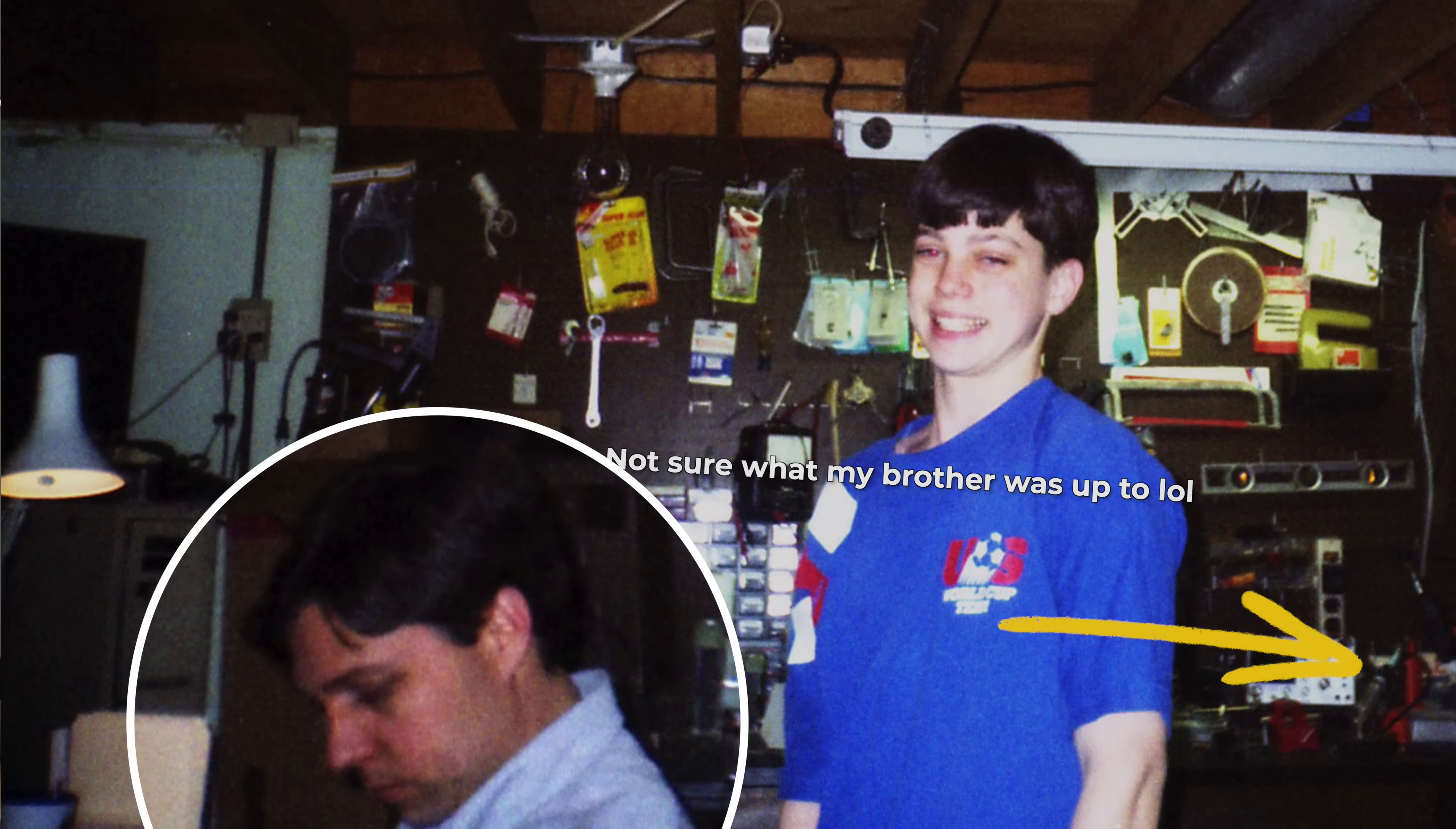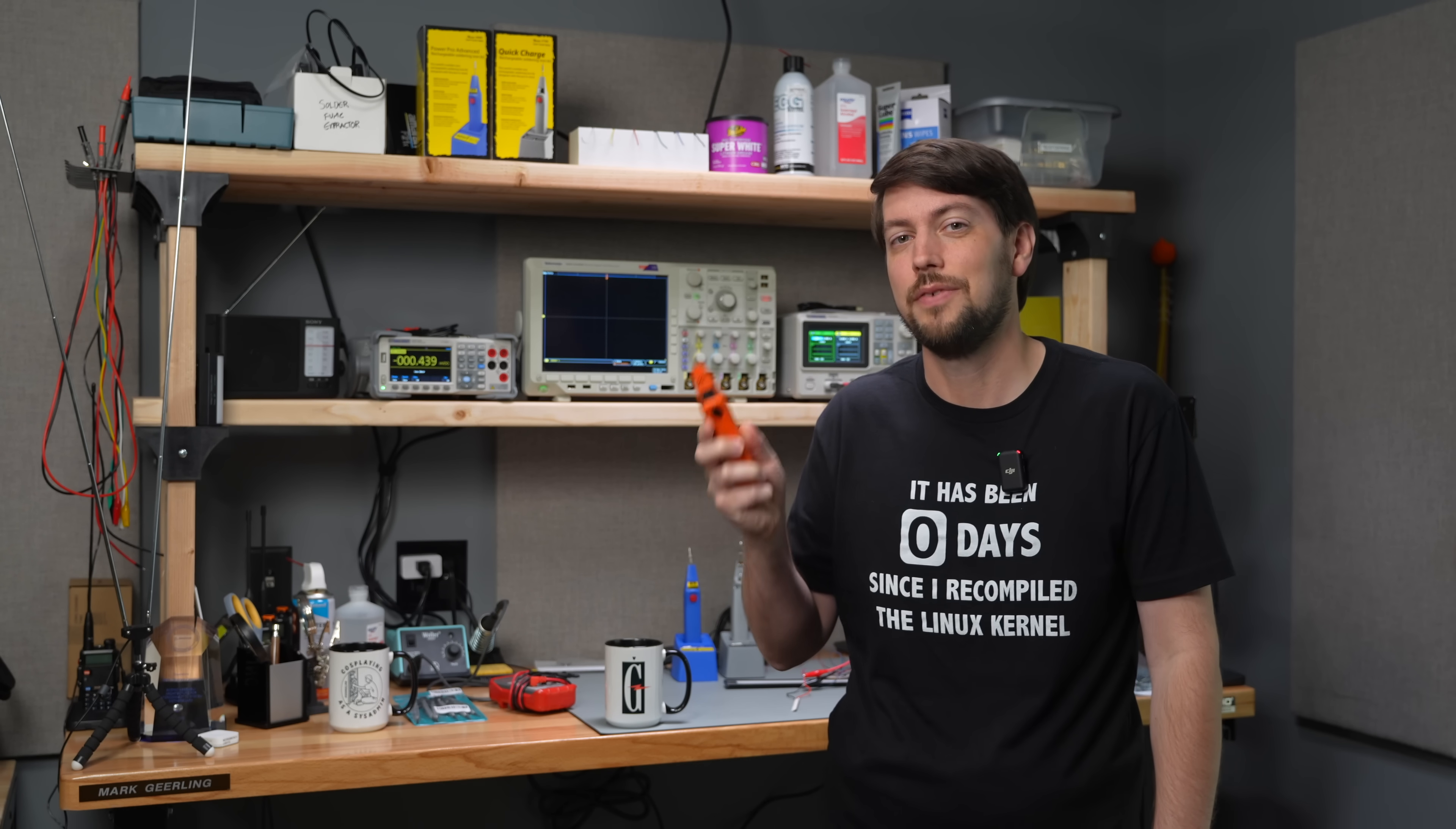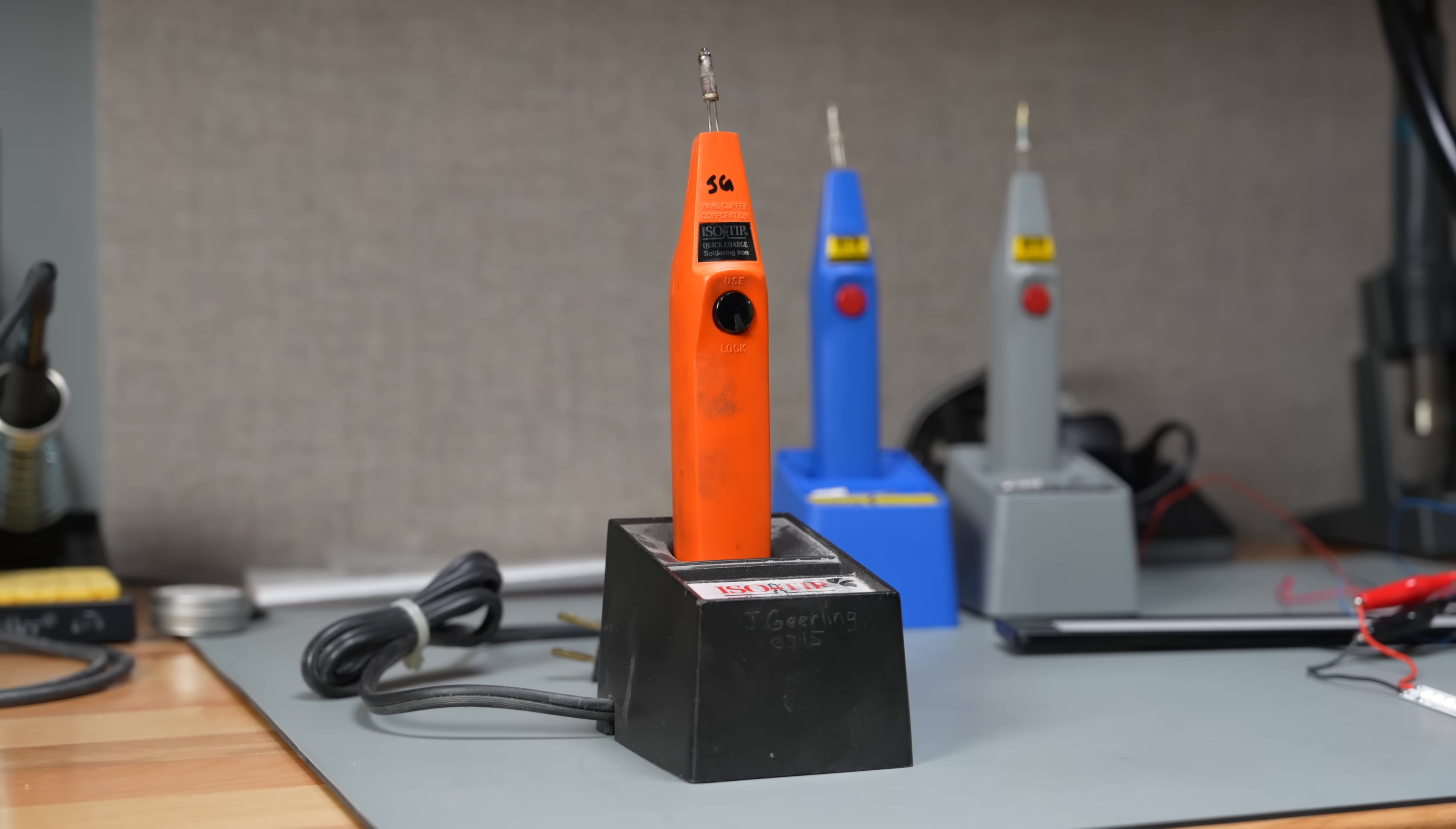This orange version was the soldering iron I learned to solder on as a kid. A little unconventional, but that's what you get when you have a dad who's a radio engineer. I decided to have him come by and asked if he'd bring this iron over to compare it to a brand new Isotip 7700 they sent me.